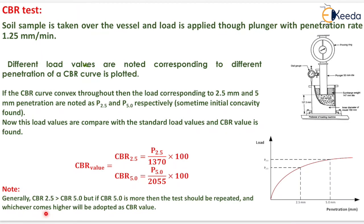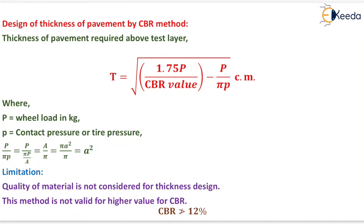Now design of thickness can be determined by using the formula that is under root of 1.75P upon CBR value minus P upon pi small p which will be in centimeter. Where P equals wheel load in kg, small p is contact pressure or tire pressure it can be determined by using the formula P upon pi P and the solution will be equals to a square. Now the limitations of CBR method quality of material is not considered for thickness design this method is not valid for higher value of CBR that is CBR should not be greater than 12%.